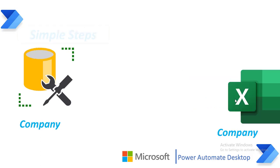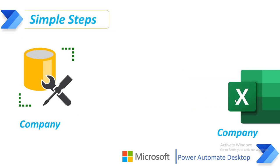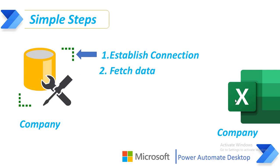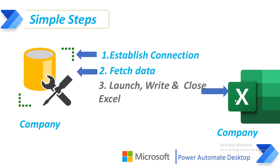I am going to follow simple steps. The first step is that by using Power Automate Desktop, I will first establish the connection using a database action. Then I will fetch the data from the SQL Server table called company. After fetching the data, I will use launch Excel and write actions to write the data into the Excel file.